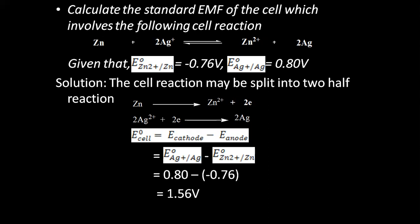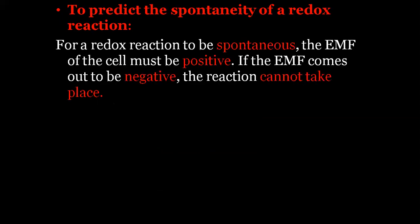That is the first application of electrochemical series. Now let us go for the second application: predicting the spontaneity of a redox reaction. With the help of electrode potential values, we can predict whether a redox reaction will take place by itself or not. Always remember: if you calculate the EMF of a cell reaction and it comes out positive, the reaction is spontaneous — it will take place by itself. If the EMF is negative, the reaction is non-spontaneous.